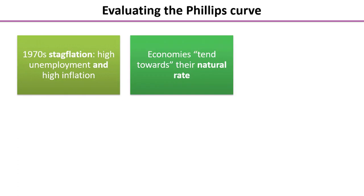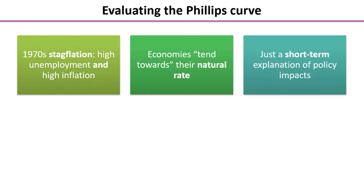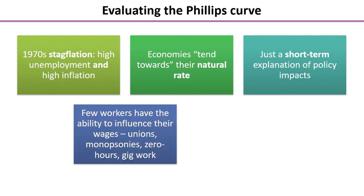Another evaluation point is that over time economies tend towards their natural rate of unemployment. Whilst we can move away from it and there is a trade-off in the short run, economies tend to bounce back towards a natural rate of unemployment — in Britain under normal economic circumstances, we expect that to be around the four to five percent mark. The Phillips Curve as drawn is really a short-term explanation of policy impacts and doesn't help us think very much about long-run impacts.